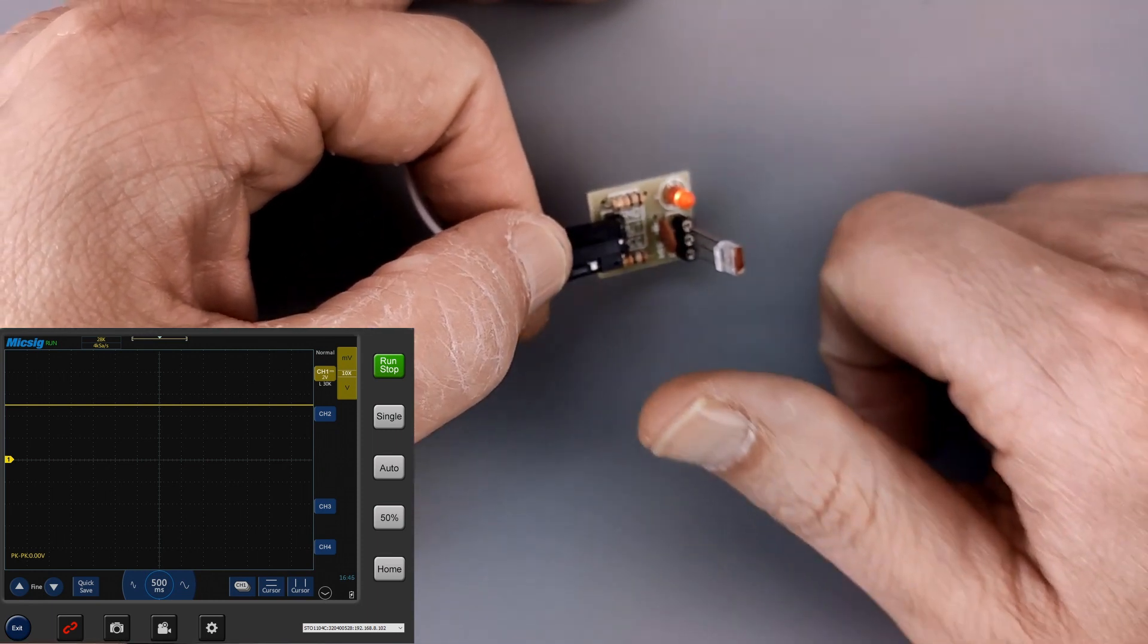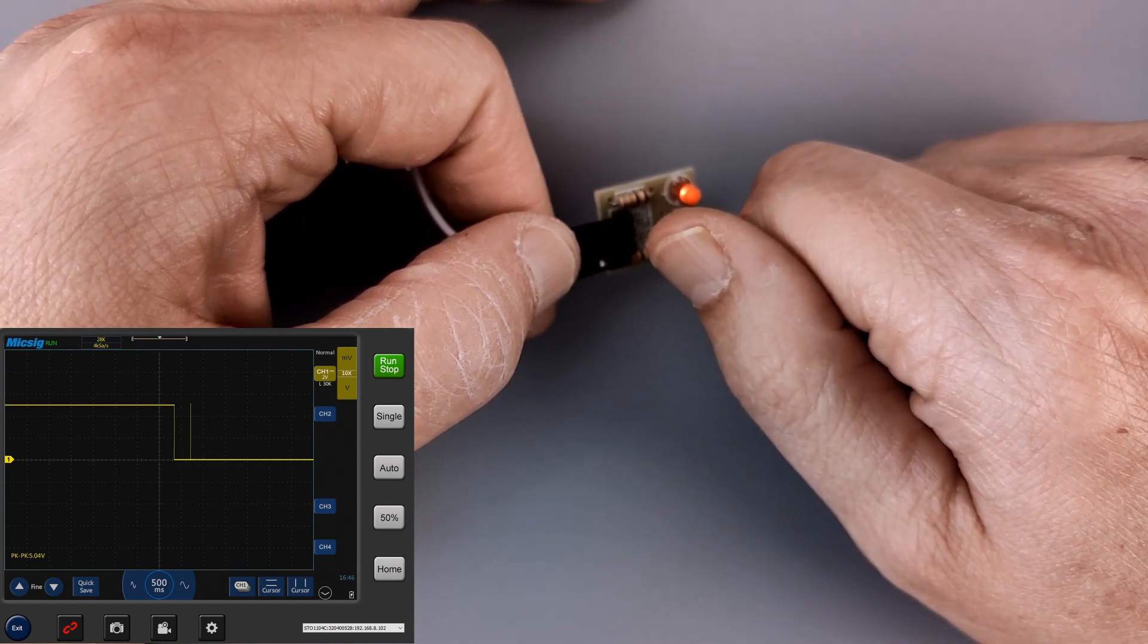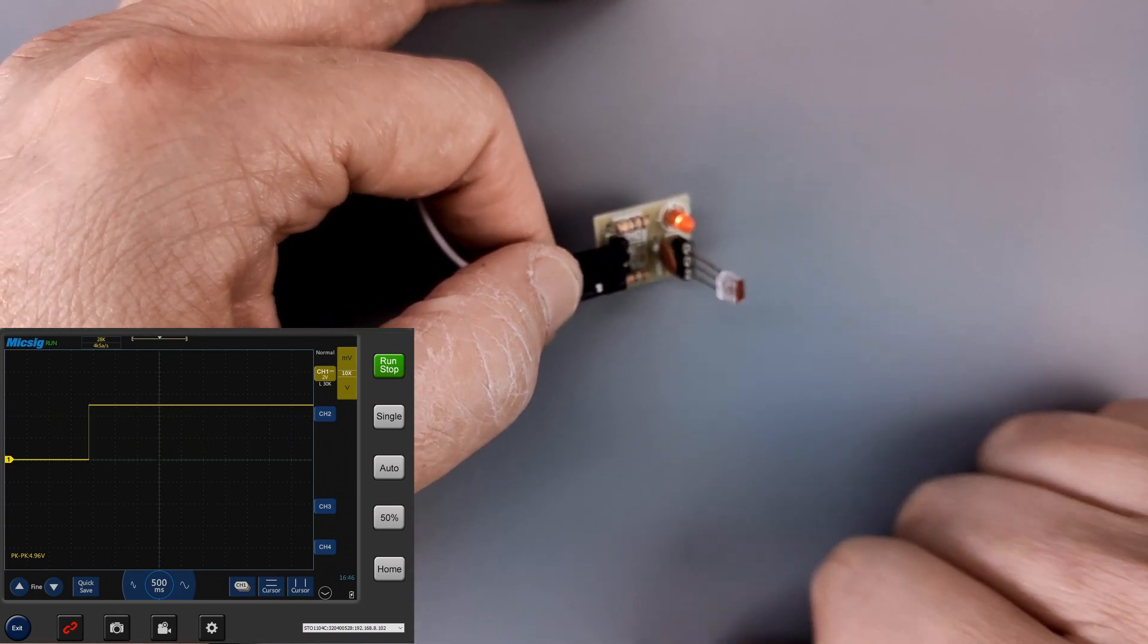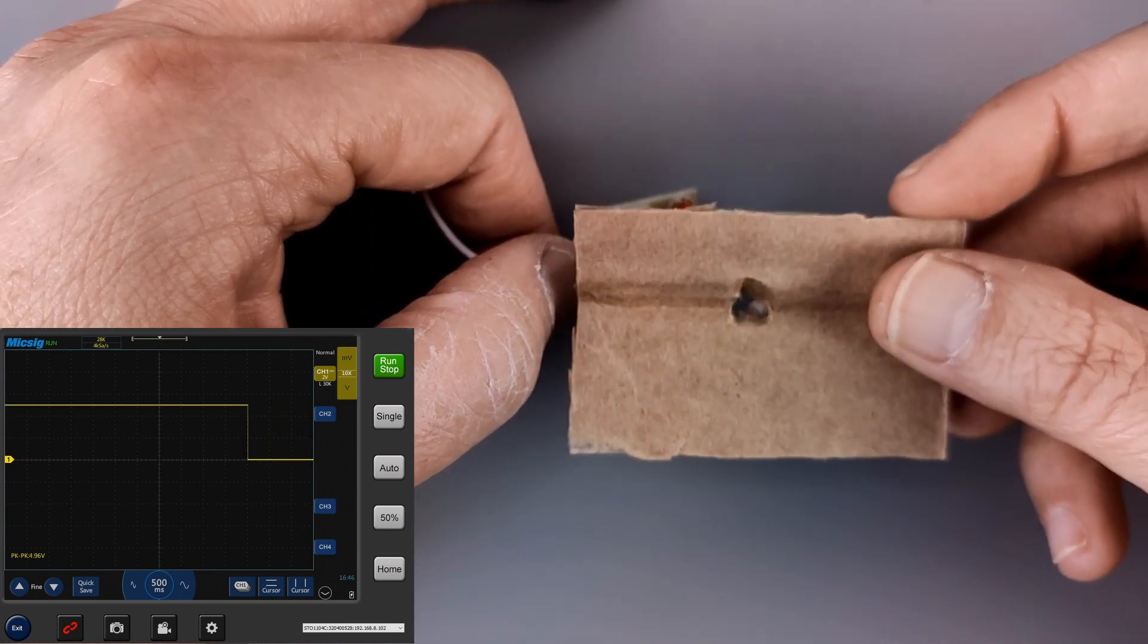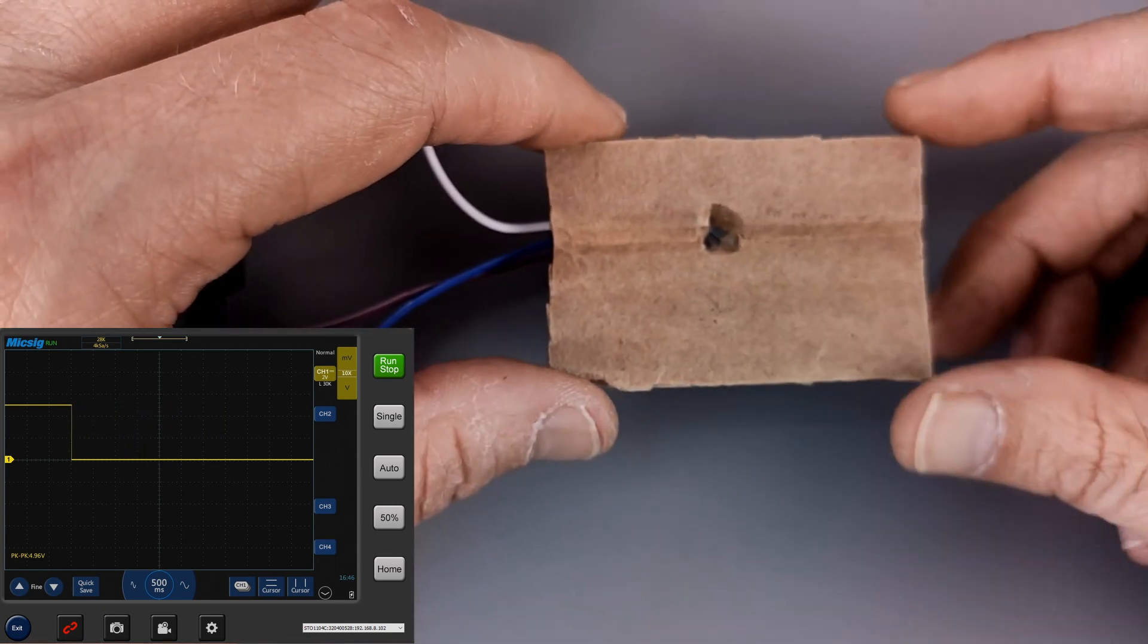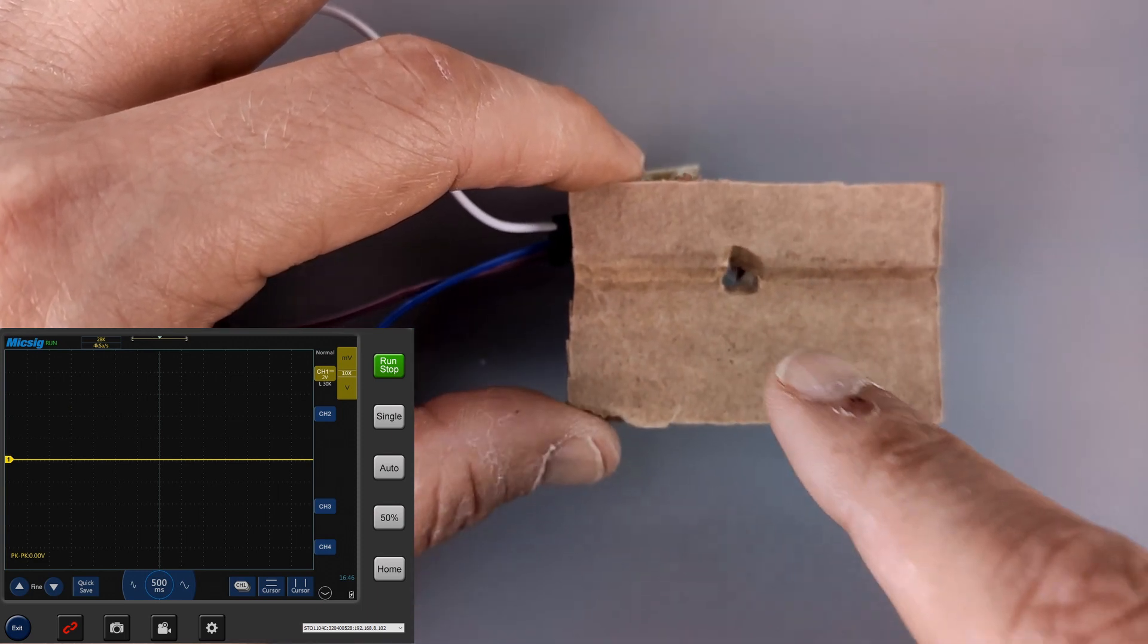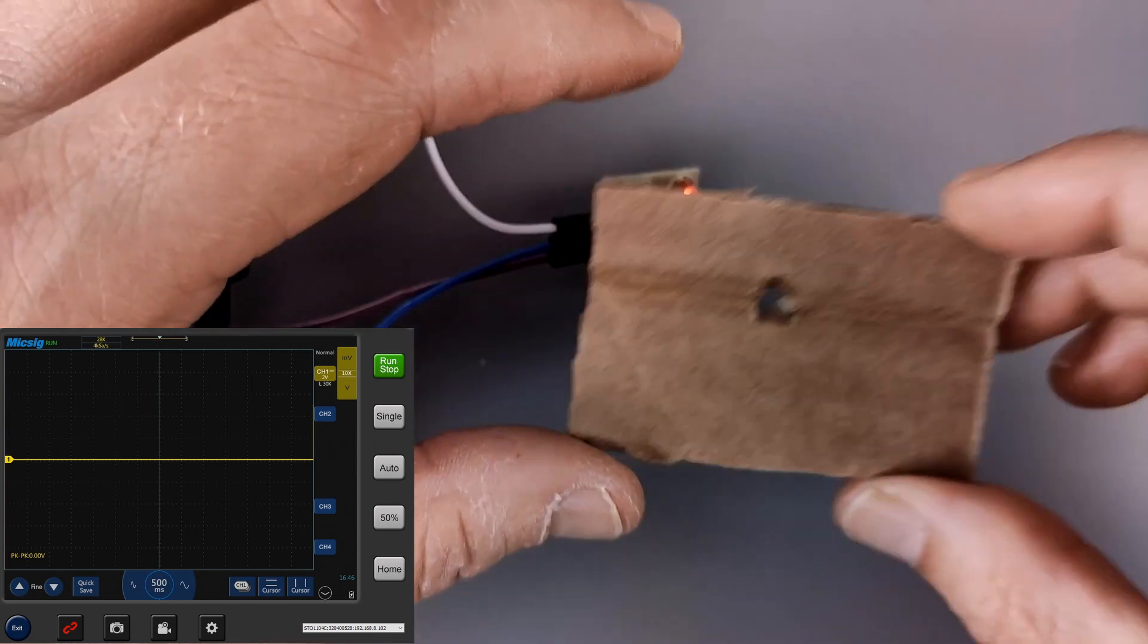Now this module is quite sensitive to all light because when I block it you can see the signal goes low. And when I release it the signal goes high again. And I figured out that holding a piece of, well in this case it's cardboard, in front of it blocks most of the light but still leaves a little gap for me, which I made myself of course, for the laser to shine through.